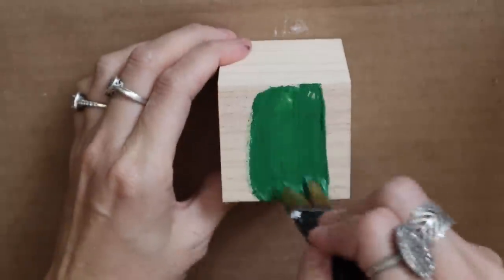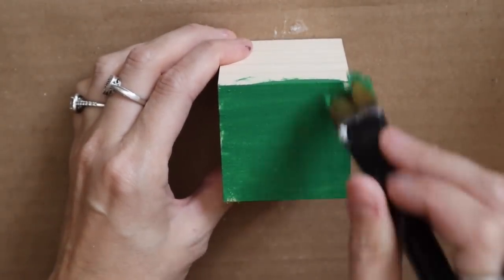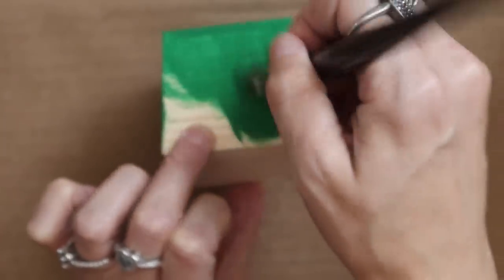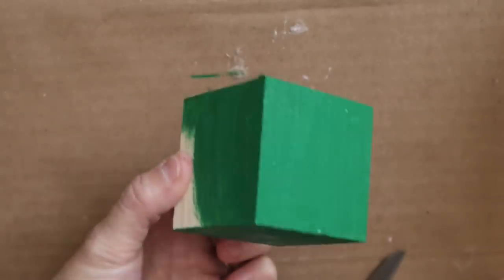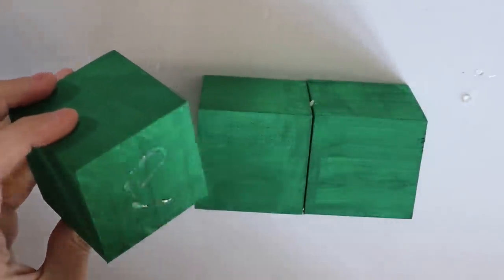First DIY, I'll be grabbing this Christmas green acrylic paint by Apple Barrel and I'm going to be painting five of these wood cubes. If you want to recreate this, make sure you grab a ton of these wood cubes. I think I used a total of 10 or more in this video, maybe 15. So I painted five of these.